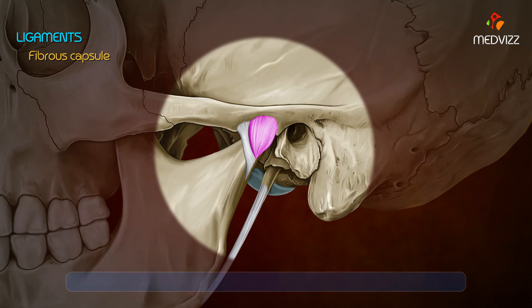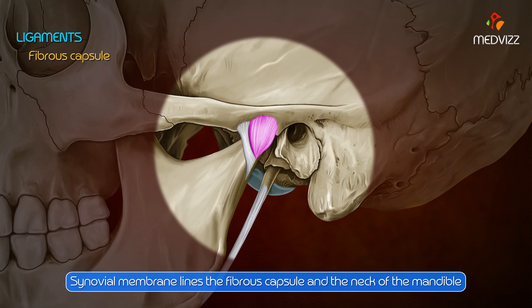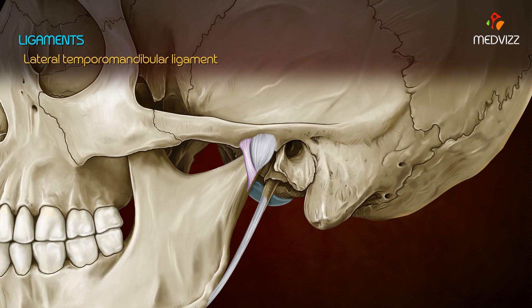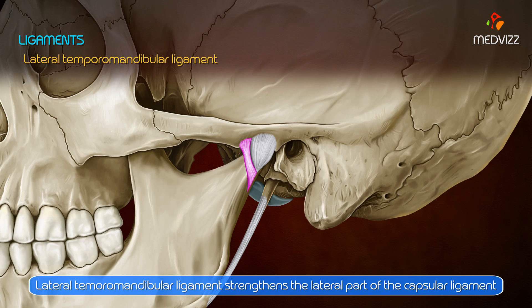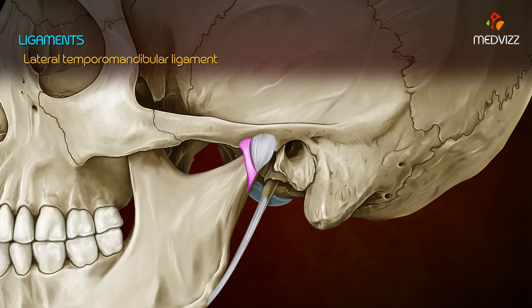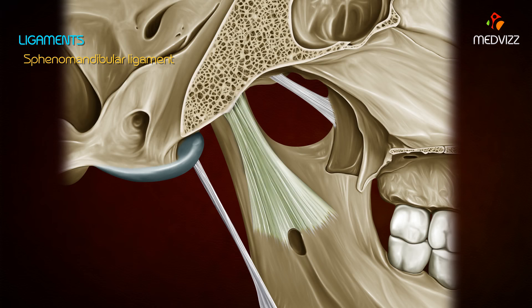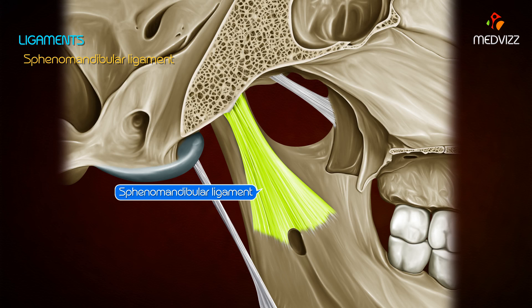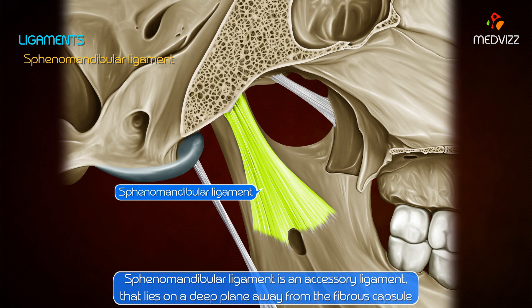The synovial membrane lines the fibrous capsule as well as the neck of the mandible. The lateral temporomandibular ligament strengthens the lateral part of the capsular ligament; its fibers are directed downwards and backwards. This ligament is attached above to the articular tubercle and below to the posterolateral aspect of the neck of the mandible.